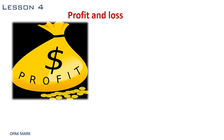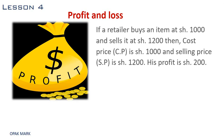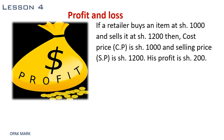Let's say for example if a trader or a retailer buys an item at 1000 shillings and sells it at 1200 shillings, then the cost price is 1000 shillings and the selling price is 1200 shillings. His profit will be 1200 shillings minus 1000 shillings, which is 200 shillings.